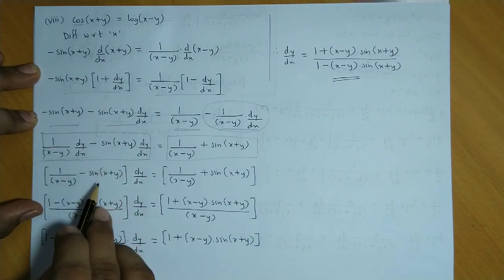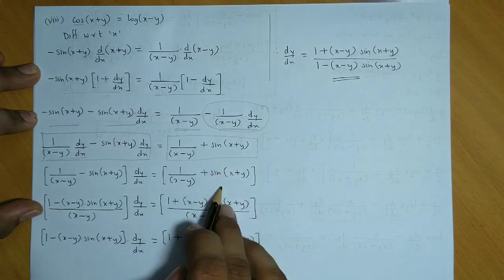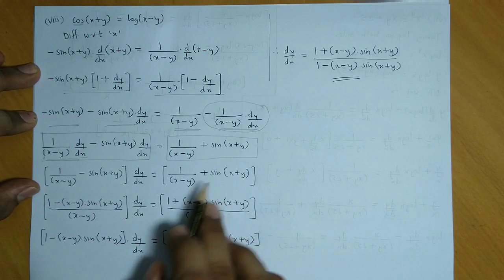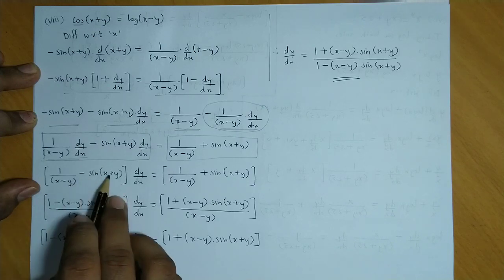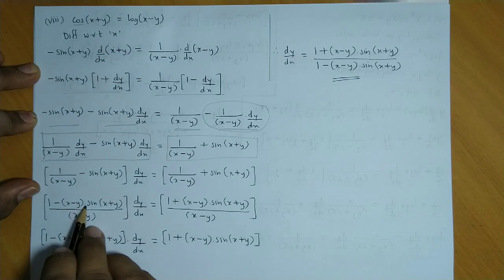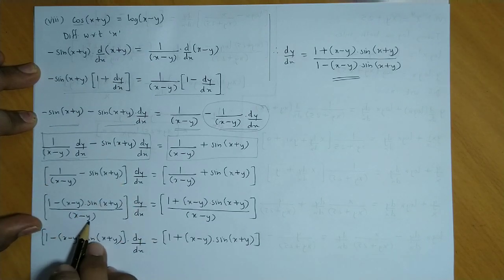Now next step would be equalizing the denominator. So here we equalize the denominator. So we get 1 minus this as it is, multiply by x minus y times sin of x plus y, upon x minus y.